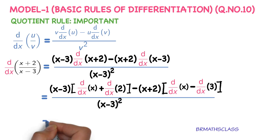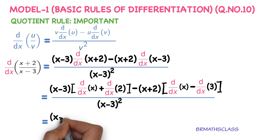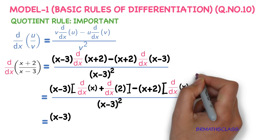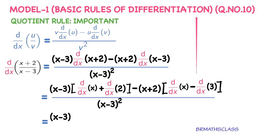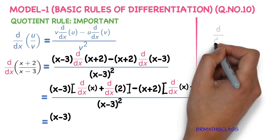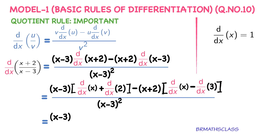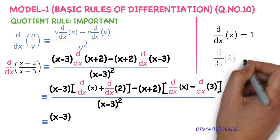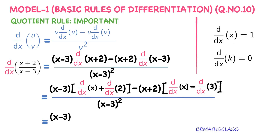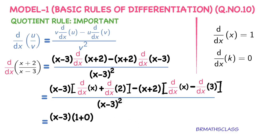Now, (x minus 3) into the derivative of x — what is the formula for the derivative of x? The derivative of x is 1. And what is the formula for the derivative of a constant? The derivative of a constant is 0. Now apply these two formulas: the derivative of x is 1, plus the derivative of 2 is 0.